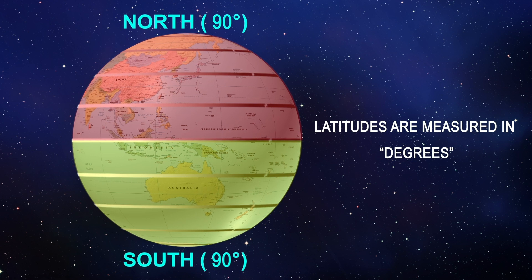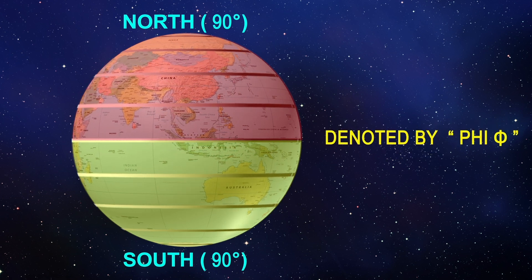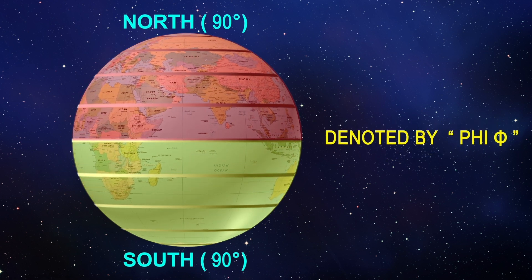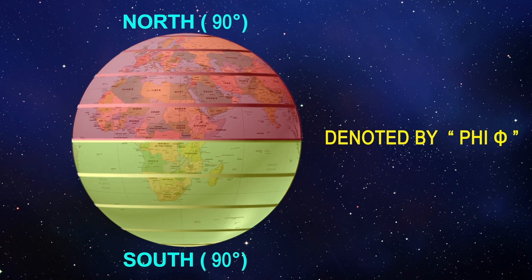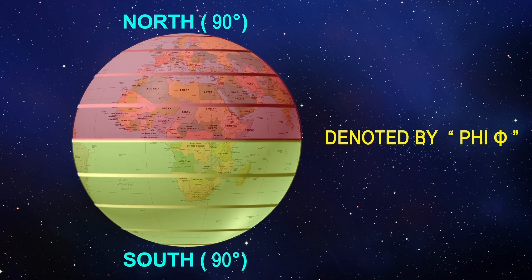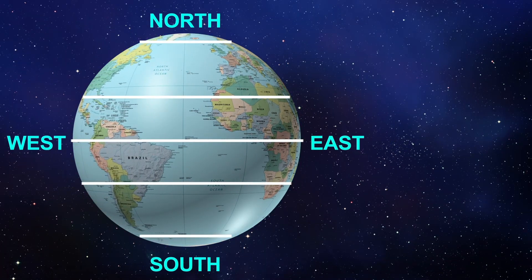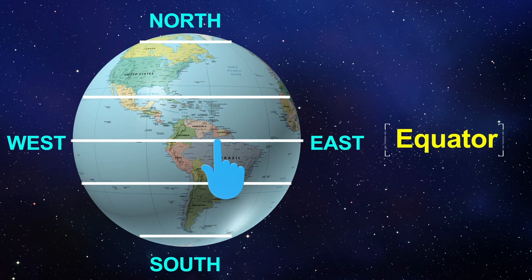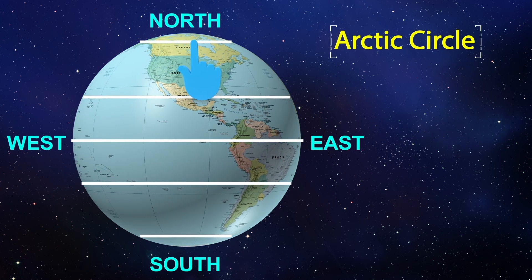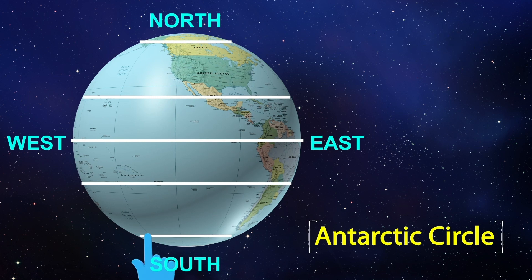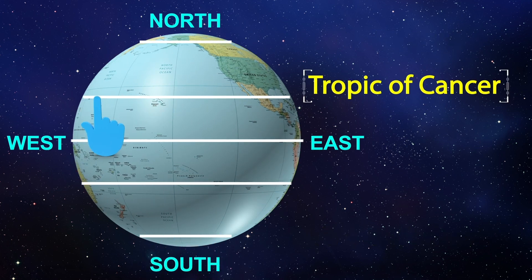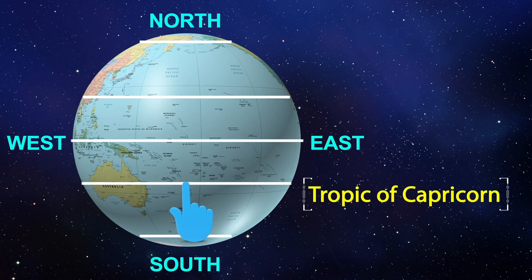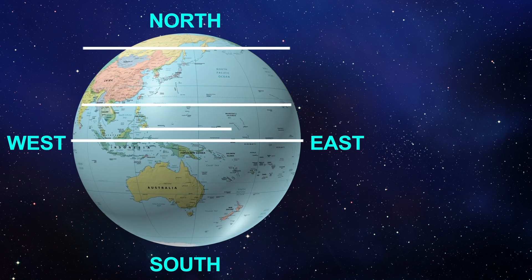Latitudes are measured in degrees and are denoted by the Greek lower-case letter phi. There are some important latitudes: the Equator, Arctic Circle, Antarctic Circle, Tropic of Cancer, and Tropic of Capricorn.